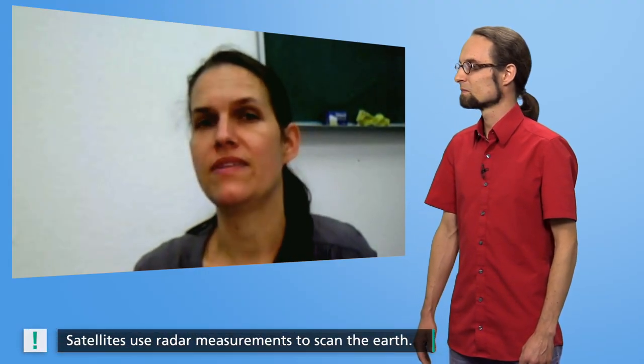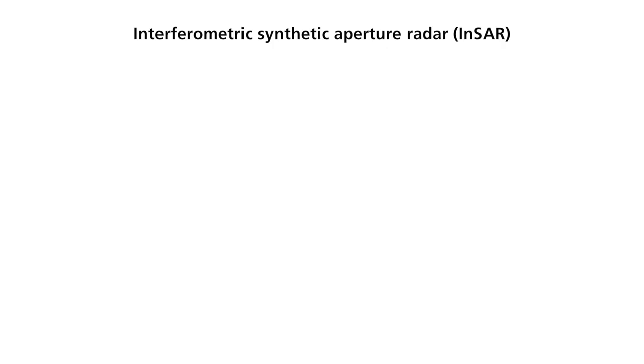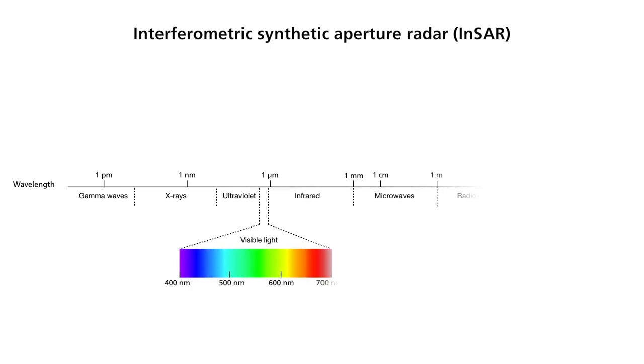We use radar waves to scan the earth's surface. The method is called Interferometric Synthetic Aperture Radar, or InSAR for short. The radar waves are microwaves in the centimeter range. And in particular, for earth observation, we use the X, C, and L bands. This corresponds to wavelengths between 3 and 23 centimeters. These wavelengths allow us to look through clouds. Hence, images can be taken in any weather.